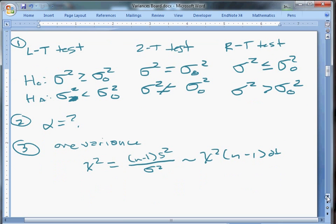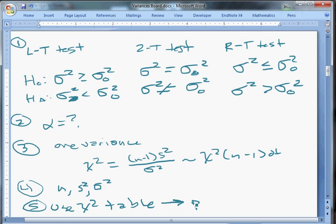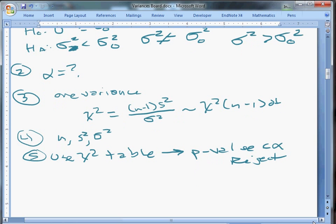And then step four, we calculate that. So we need to find n, s-squared, and sigma-squared. You've got to be careful about those squares. You don't want to make mistakes there. But those are the only things that we need. And then step five, we use our chi-squared table and calculate a p-value. And then we draw conclusions just like we always did. P-value is less than alpha, reject. Otherwise, fail to reject. And that's that. That's how you do hypothesis testing with one variance.